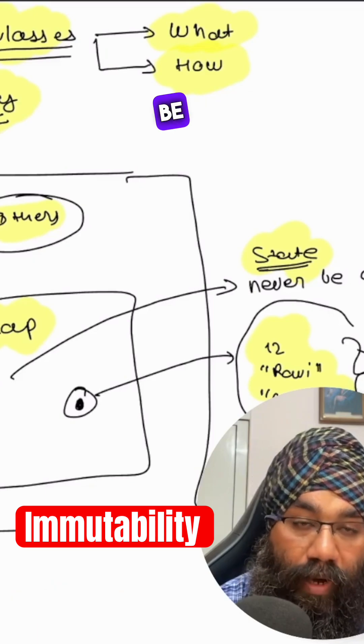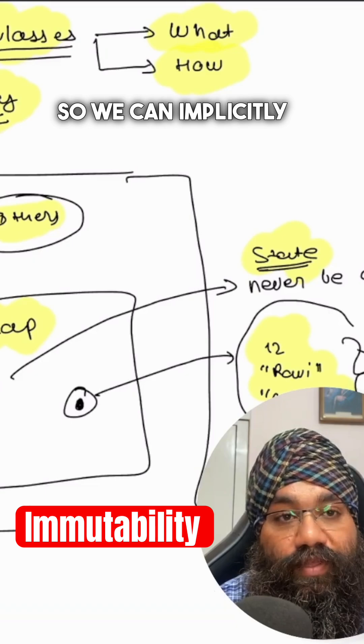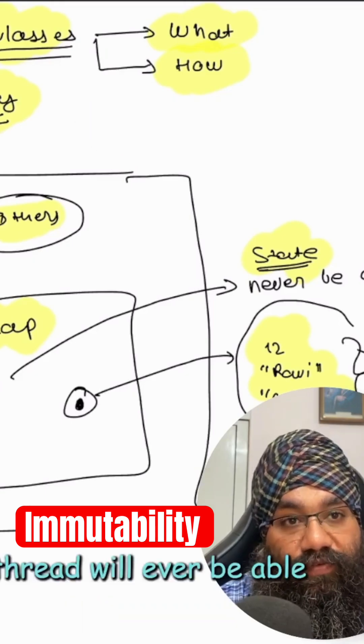But since in the immutable case they will never be modified, we can implicitly say that they are thread safe because no modifications can occur.